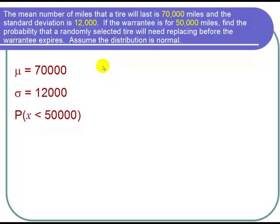Finally, we want to find the probability that the tire will need replacing before the warranty expires, which is at 50,000 miles. If it needs replacing before the warranty expires, that means that X will be less than 50,000. We want the probability that X is less than 50,000.